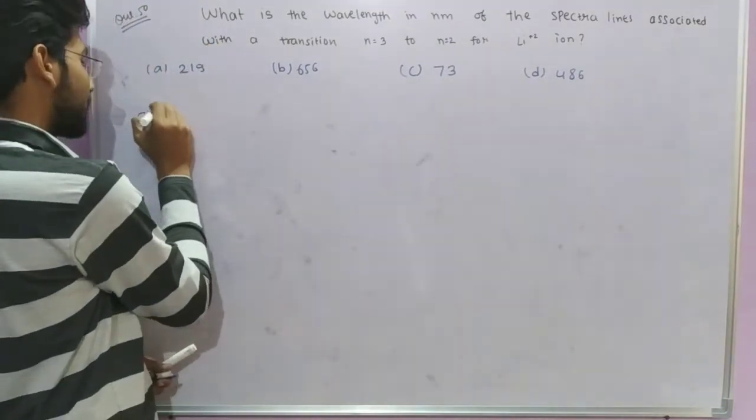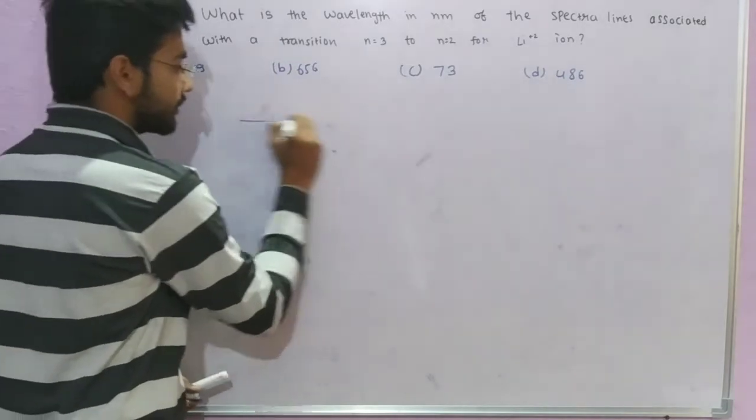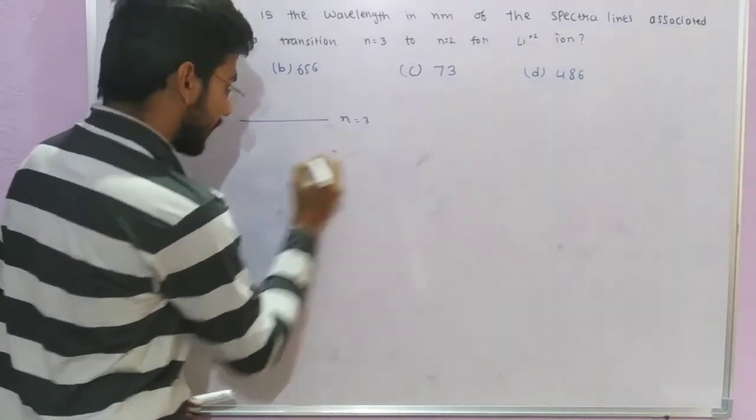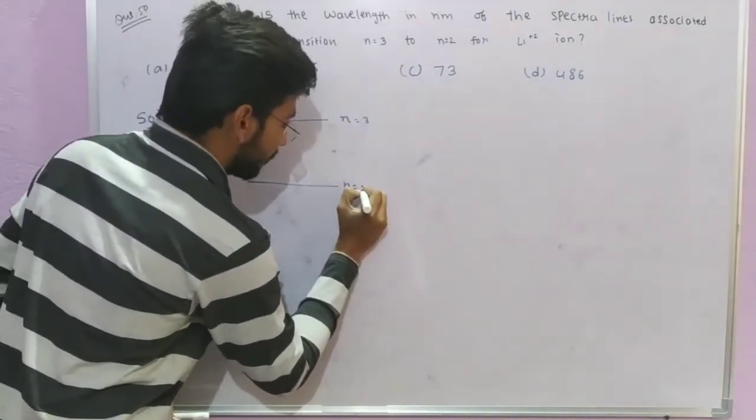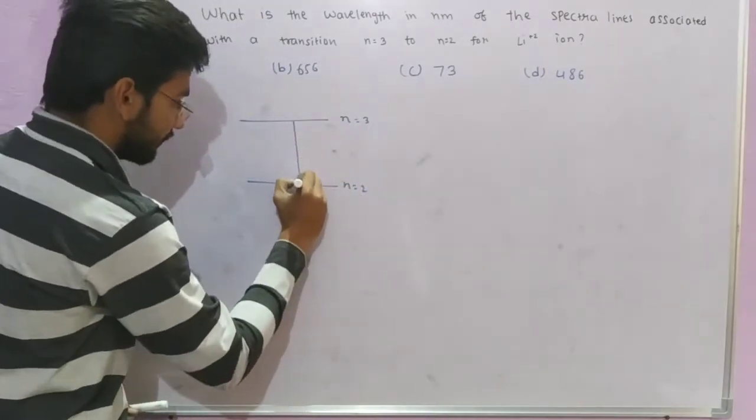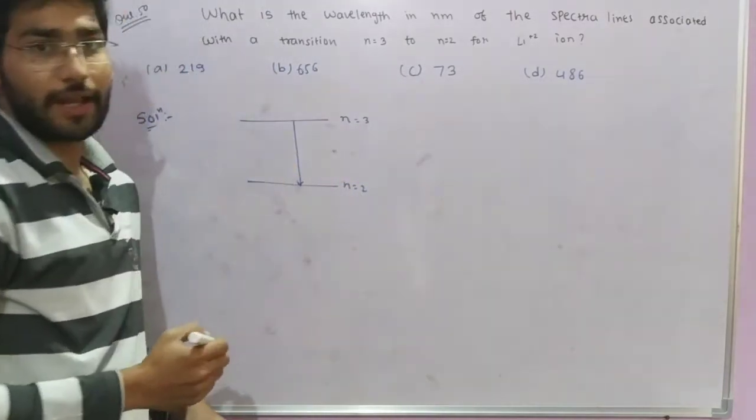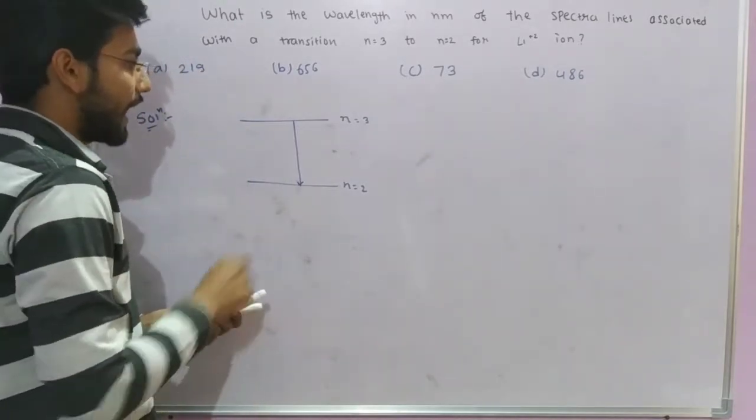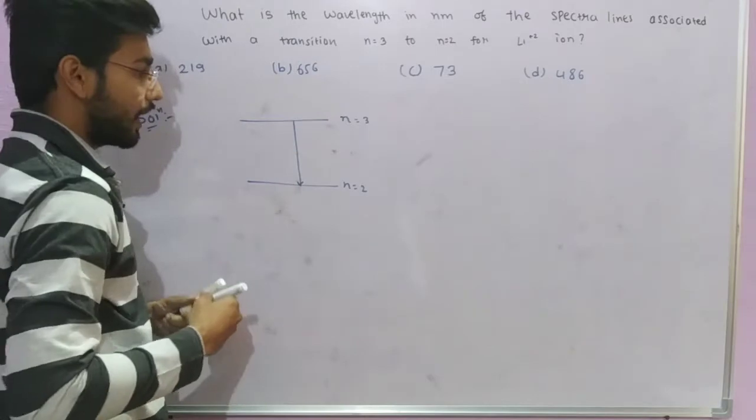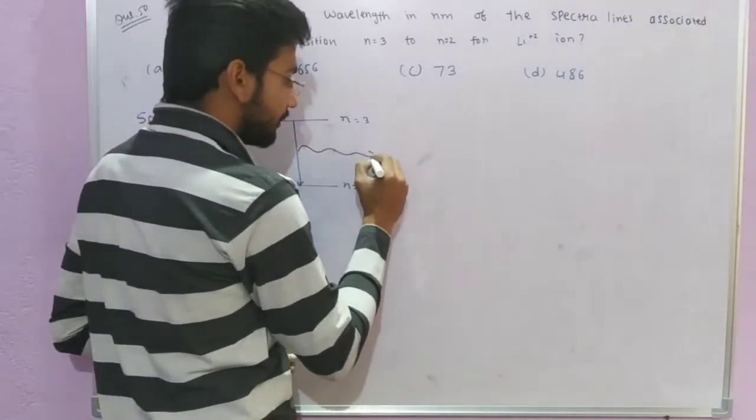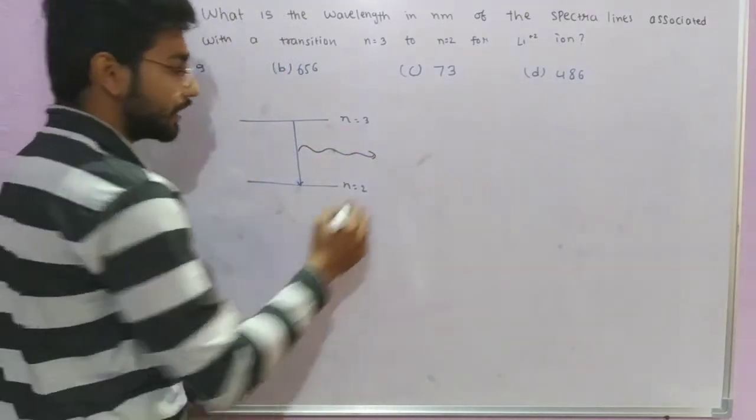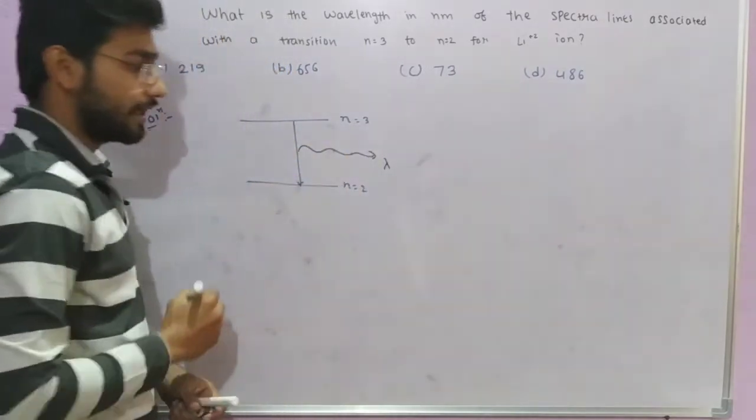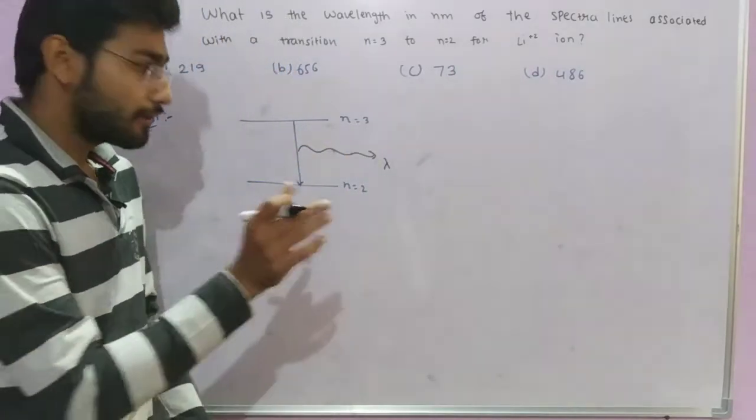Li²⁺ ion type transition is given. Upper is n=3 and lower is n=2. You have a transition given where electron jumps from higher energy level to lower energy level. When electron jumps from higher to lower energy level, obviously it will emit radiation.